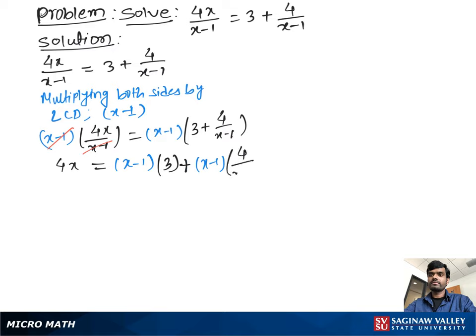Then we can write 4x equal to, then we multiply 3 times x, 3x minus 3 plus x minus 1, x minus 1 cancel out. So we get 4, now we simplify, so 4x equal to 3x plus 1, negative 3 plus 4 is plus 1.